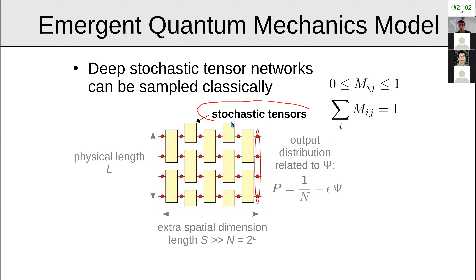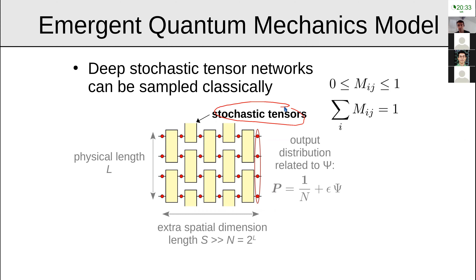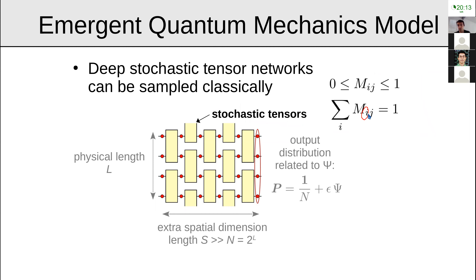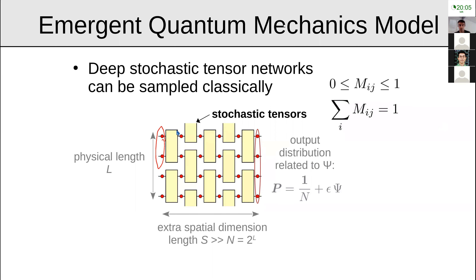The first ingredient is a very large spatial extra dimension. Quantum mechanics is exponentially harder than classical mechanics to simulate, so the extra dimension should be at least exponentially long in L (for L qubits). This gives the stochastic circuit enough parameters to parameterize the exponentially large number of wave functions. Stochastic tensors are useful because they can be classically sampled: unlike unitary tensor networks, you can just input bits and get a probability distribution for a new set of bits.